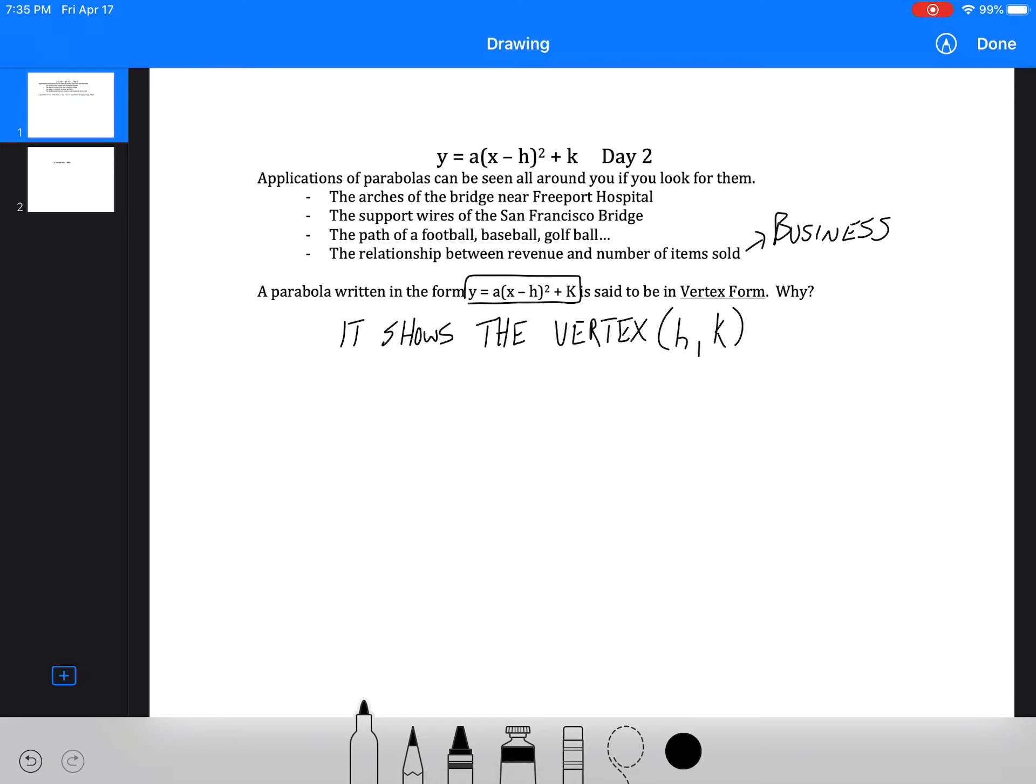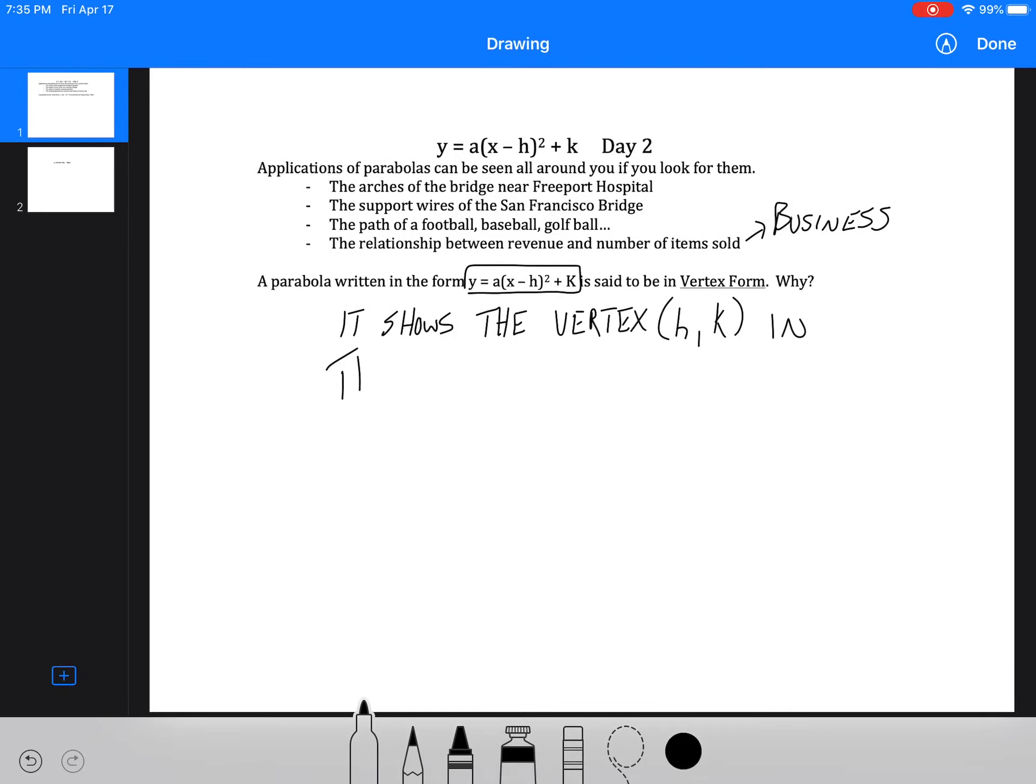the vertex (h, k) right in the equation. Okay, the other two forms that we could use are ax²